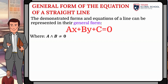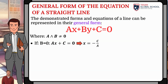Thus, we will find the elements of the linear equation given by the relationships of these coefficients. If b equals zero, the equation reduces to ax + c = 0. Therefore, the abscissa x is equal to negative c over a.